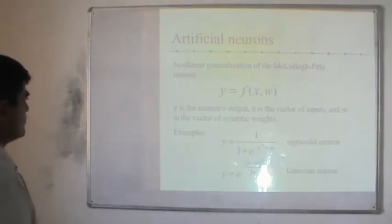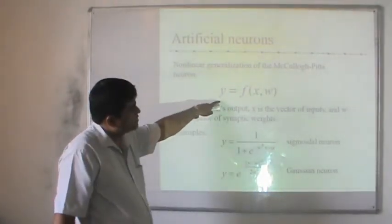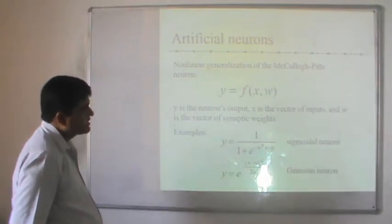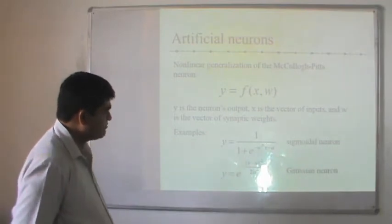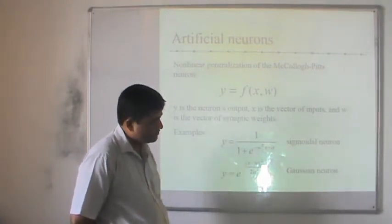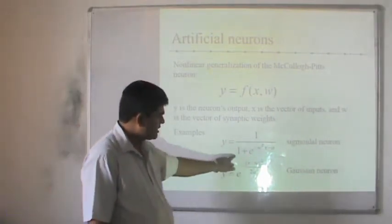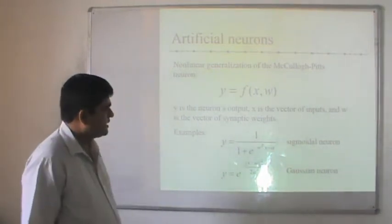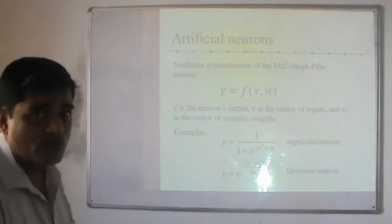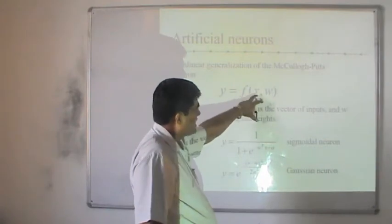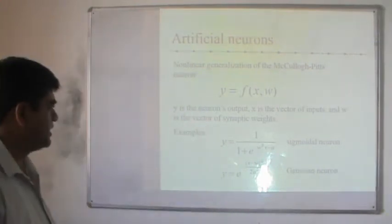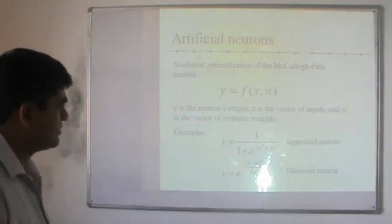For the generalized McCulloch-Pitts neuron model, y equals a function of the input spike and the weight vector, where y is the neuron's output, x is the vector of inputs, and w is the vector of synaptic rates. For example, we can use a sigmoidal or Gaussian activation function: y = 1 / (1 + e^(−σx)), where sigma is the steepness parameter and x is the spike input.